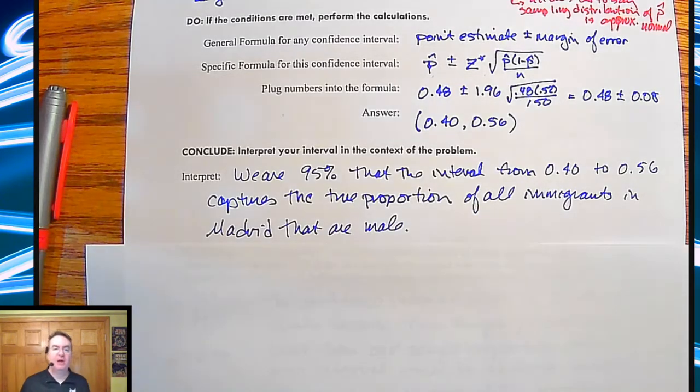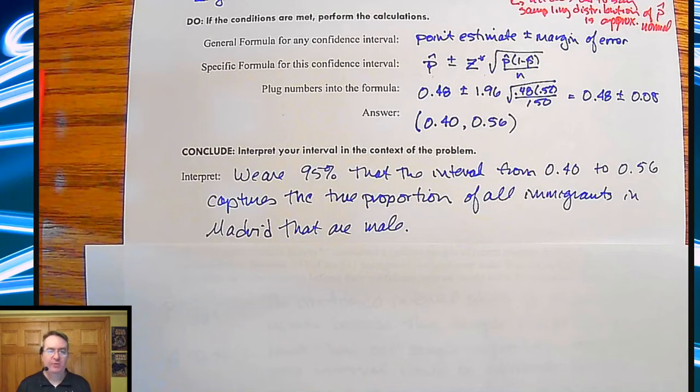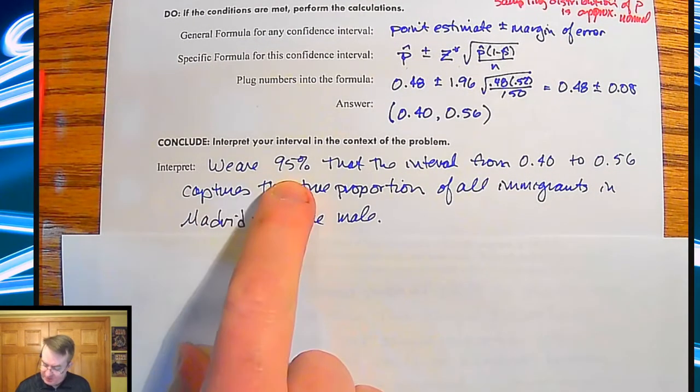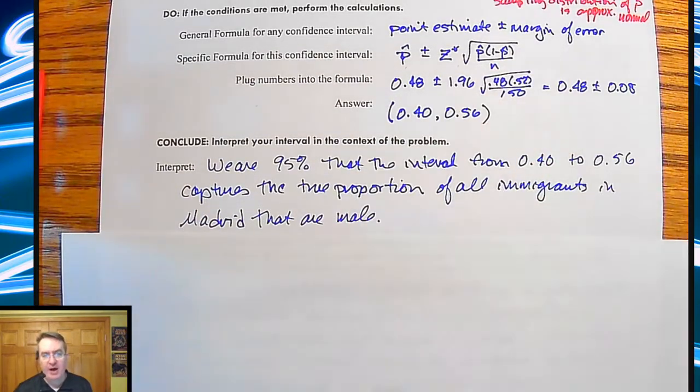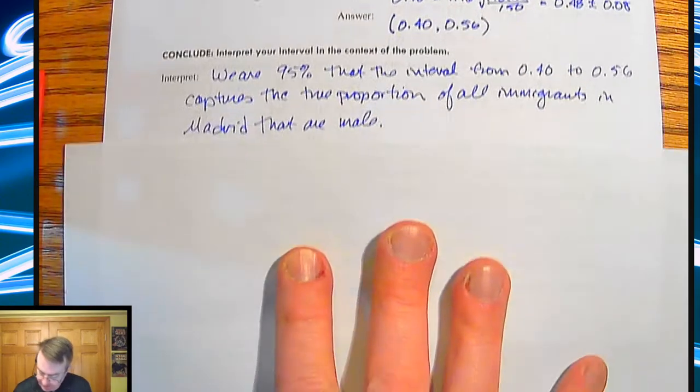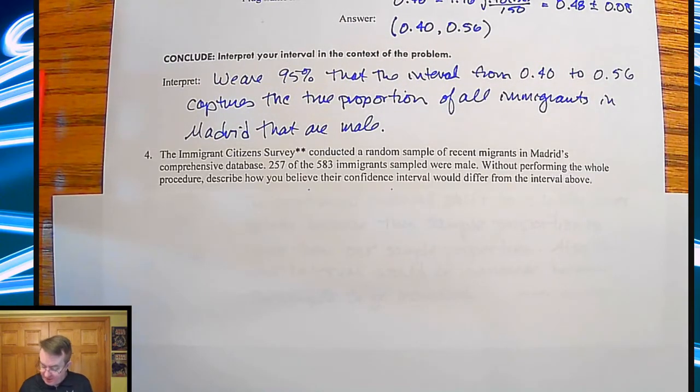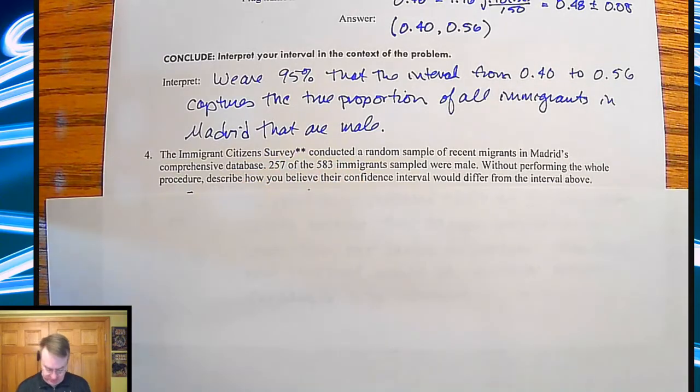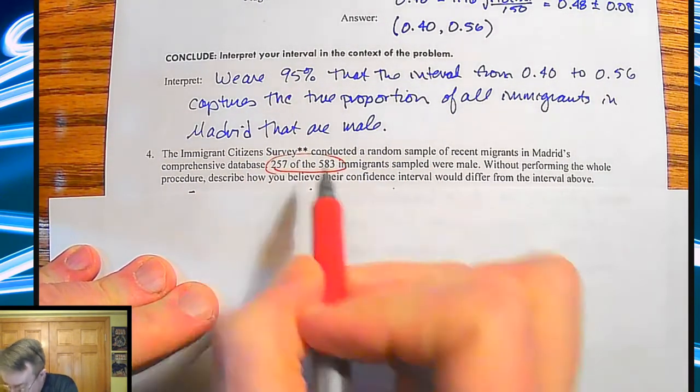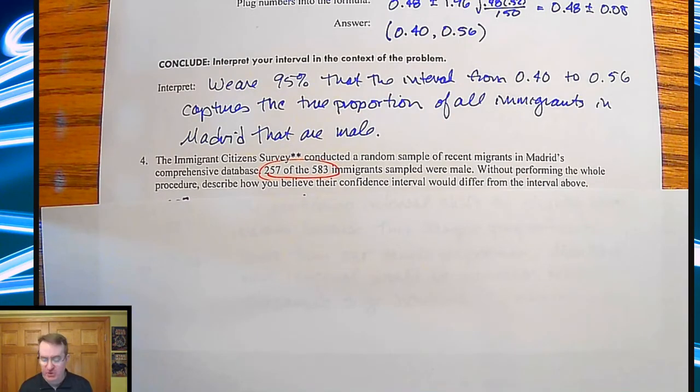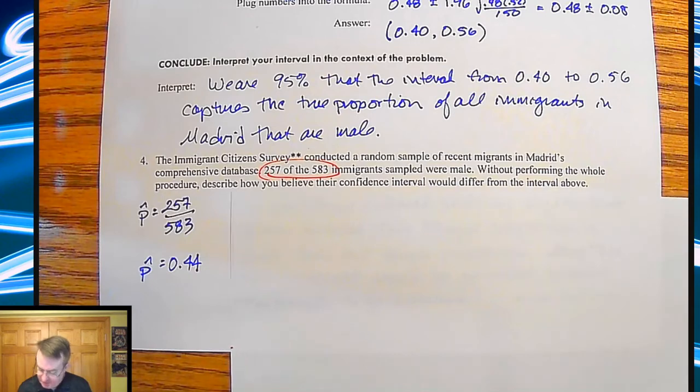Now, does this necessarily match up with what was going on in Central America? No. However, there was the same arguments being made in the European community as was being made about what was happening in Central America. So it's worth taking a look at there. All right. So again, what percentage confident, what's the interval captures the true proportion of context. Now, what turns out to be happening, and this is what they base the beads on, is the fact that the Immigration Citizen Survey conducted a random sample of migrants in Madrid's comprehensive database. 257 out of the 583 immigrants sampled were male. Without performing the whole thing above, how would this change what we saw up above? A couple of things. First of all, let's check out what the percentage is. That percentage turns out to be 44%. We got 48%.